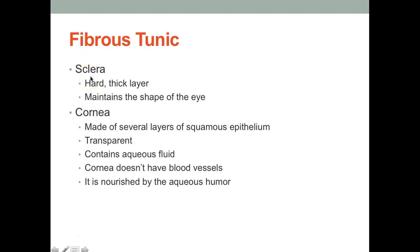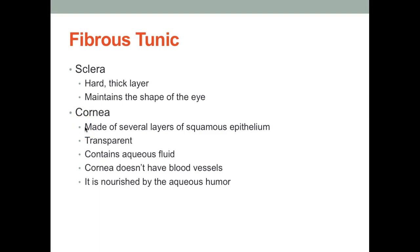The sclera is the white part of your eye — its purpose is to maintain the shape of the eye and it's a hard, thick fibrous layer. The cornea is made of several layers of squamous epithelium; it's transparent, contains aqueous fluid, and has no blood vessels — it's nourished by the aqueous humor inside. The cornea acts like a window: it's transparent to allow light in, because without light entering the eye vision would not be possible.